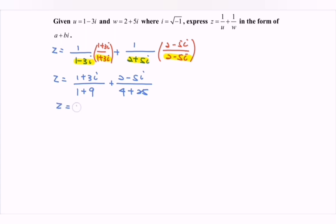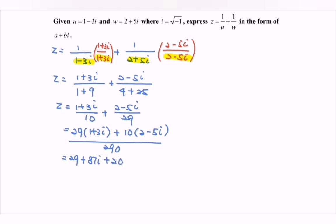So z equals 1 plus 3i over 10 plus 2 minus 5i over 29. Multiply both sides to equate the denominator. We have 29 multiplied with 1 plus 3i plus 10 multiplied with 2 minus 5i over 290. Expanding and simplifying, we have 29 plus 87i plus 20 minus 50i over 290.